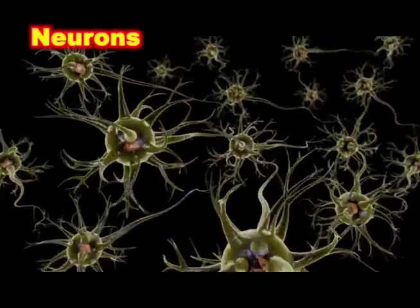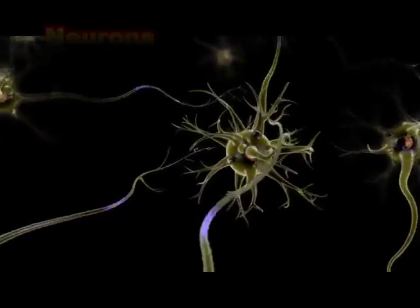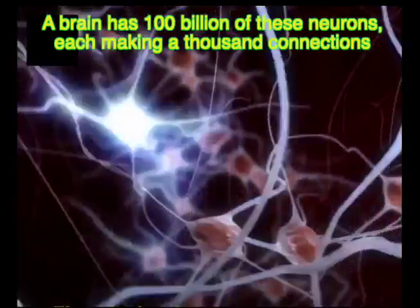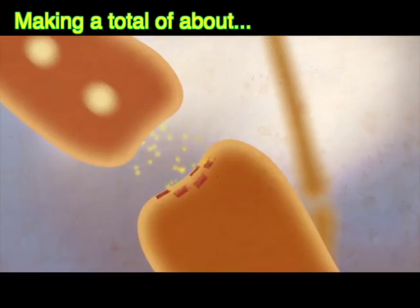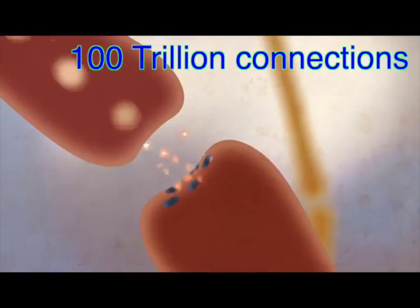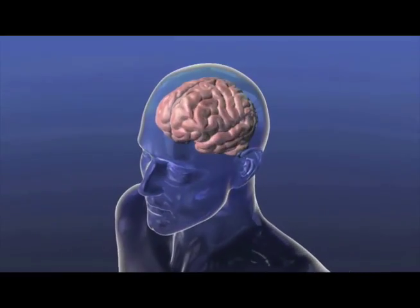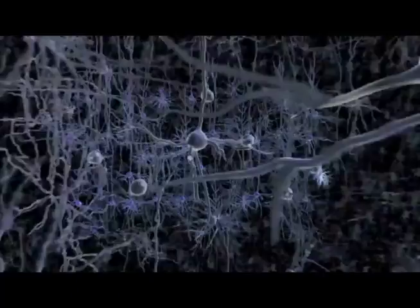We start by understanding brain cells called neurons. A brain has about 100 billion neurons. Each brain cell makes a thousand or so connections. That is, brain cells link into networks.